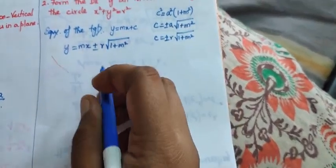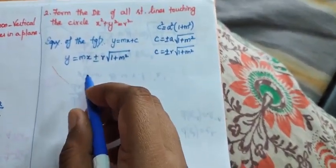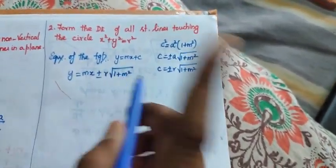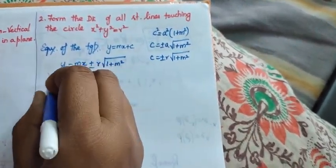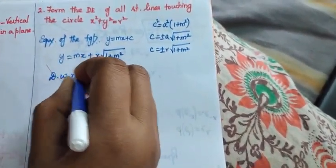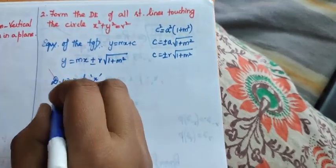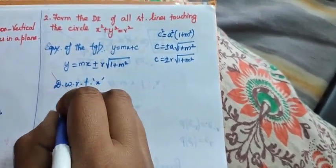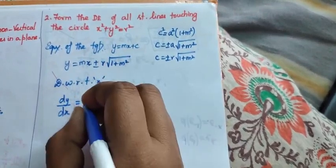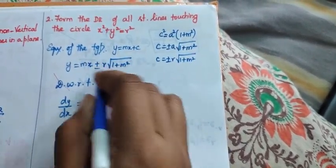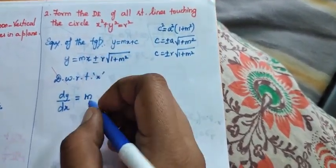So, how many constant is here? Here it is a single constant. So, differentiate with respect to x. dy by dx, the differentiation of x is 1, so m. The remaining are fully constant, so we can leave it out.